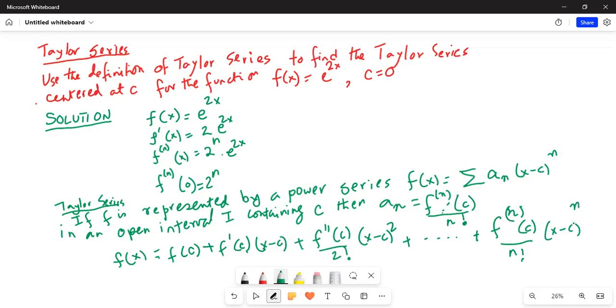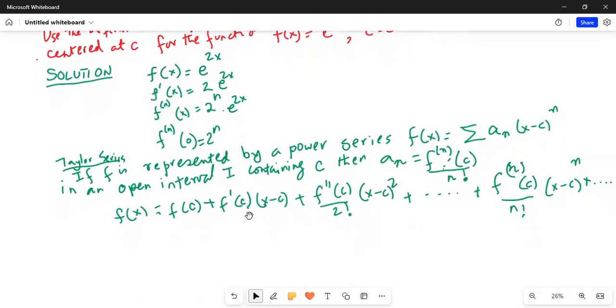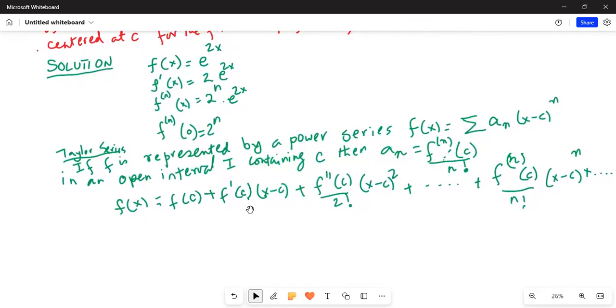Some people write this as f^(n)(c) times (x-c)^n. So, let me create some space. Applying this definition of Taylor series, we can write...